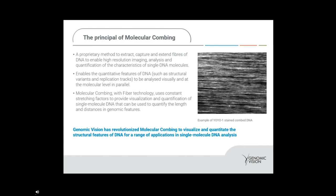An example of the fibers of DNA on one of our engraved coverslips is shown on the right-hand side of the slide, where we have YoYo1, which is an intercalating dye that shows the immobilization of DNA to the coverslip and the appropriate staining. This shows the type of density and uniformity you would expect to see. With molecular combing and our fiber-based technologies, we use constant stretching factors to provide visualization and quantification of single-molecule DNA to quantify the length and distances of genomic features.